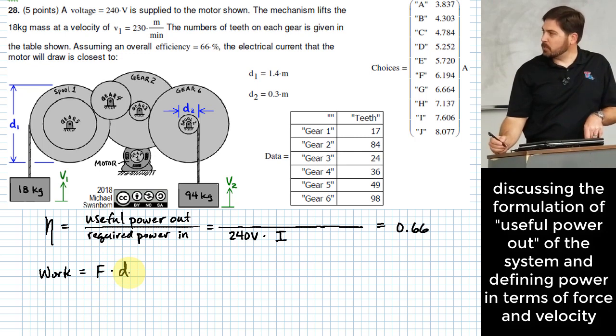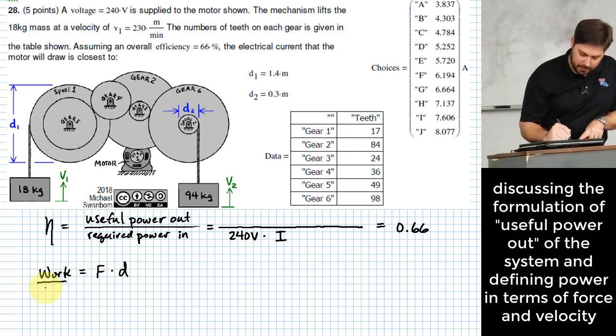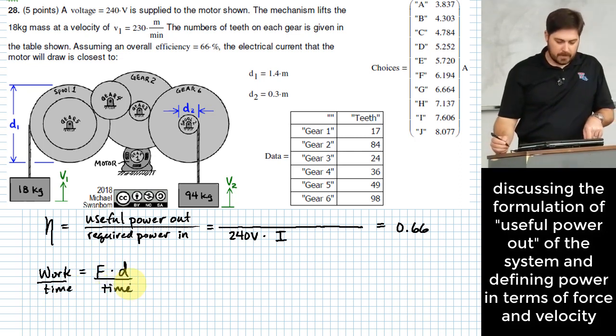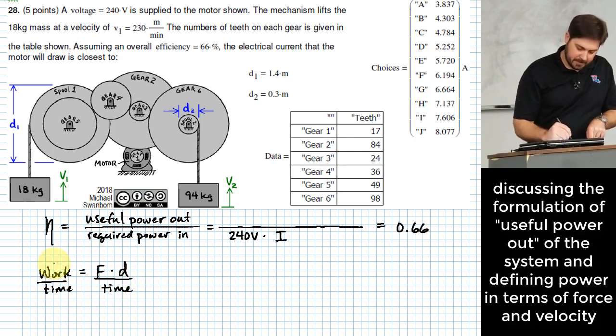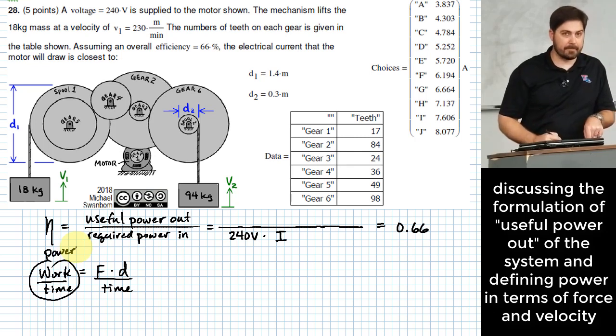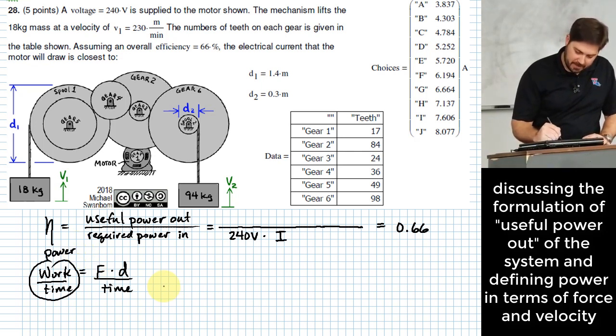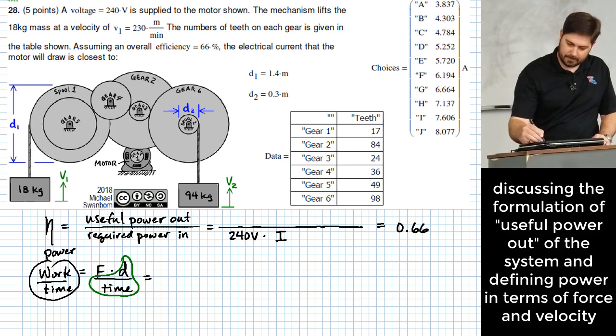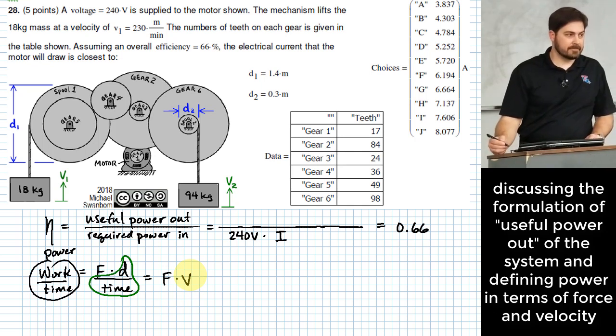Now my question is what happens if I take this expression and I divide both sides by time? On the left, this is power. Work per time, it's the rate of flow of work, rate of flow of energy. What do I get on the right side? What if I collect d over time? That's a velocity. So force times velocity. So power is equal to force times velocity.